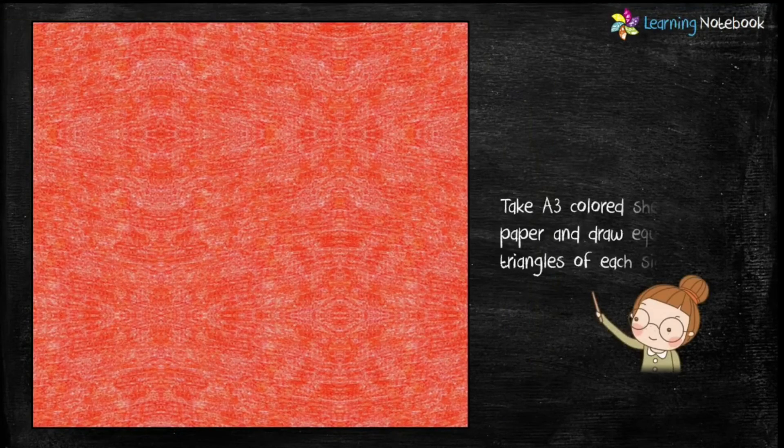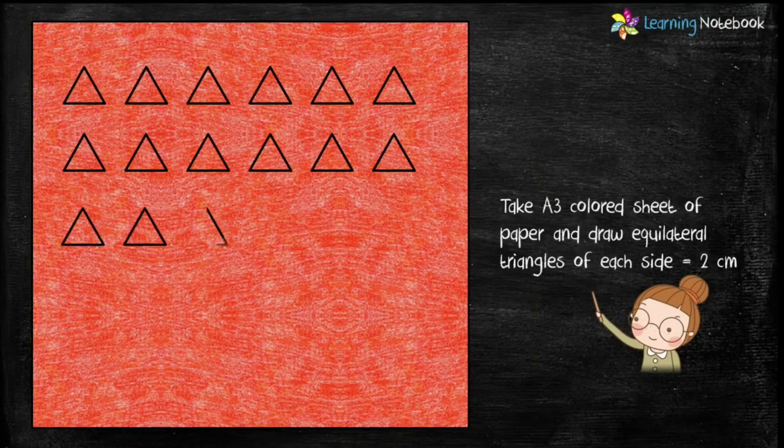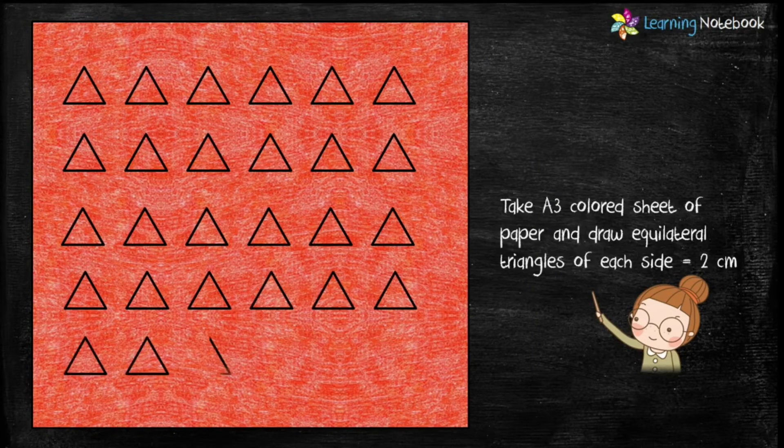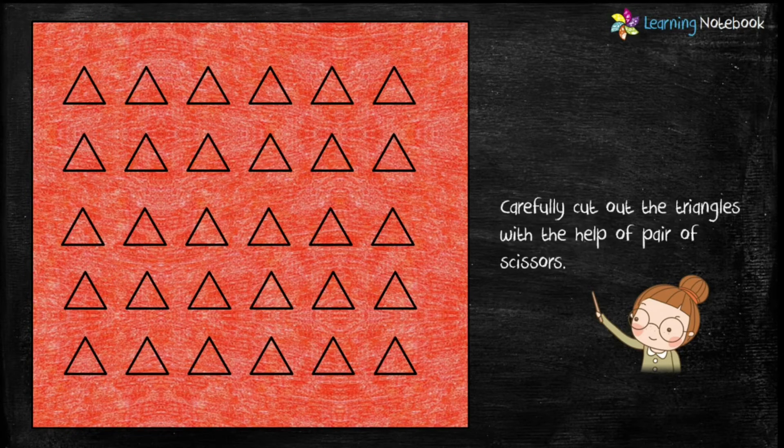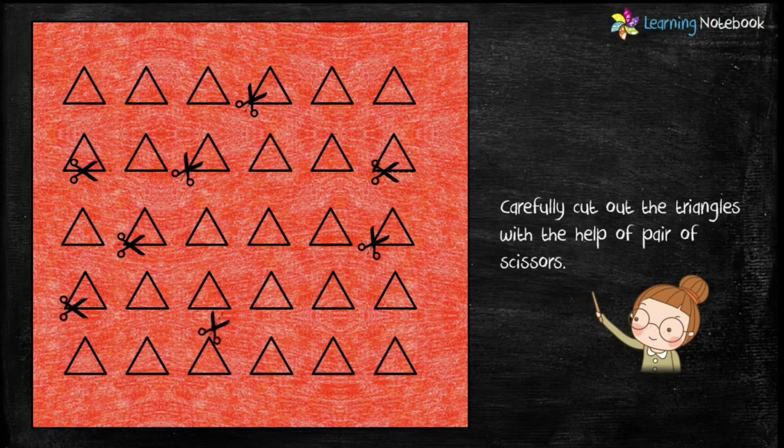Let's start the activity. For this activity, we need a lot of equilateral triangles. So, take A3 colored sheet of paper and draw equilateral triangles of each side equals to 2 cm. Then, carefully cut out all these triangles using pair of scissors.